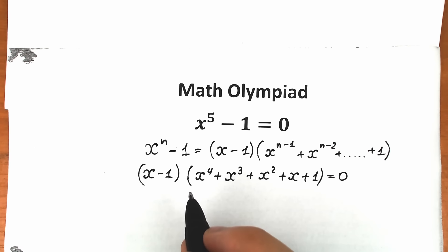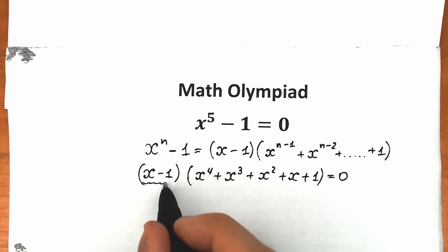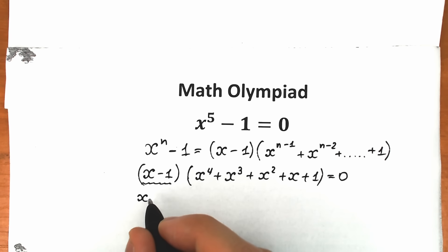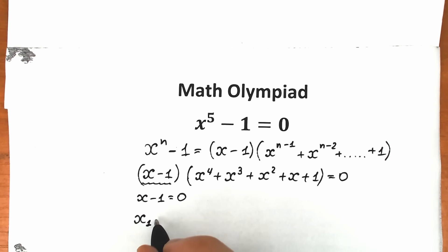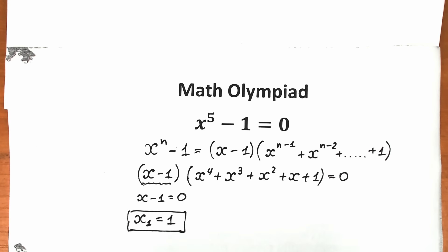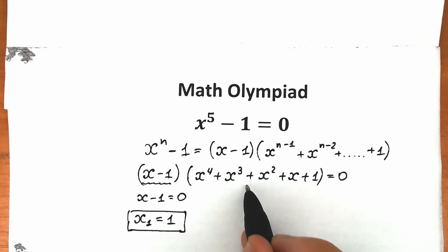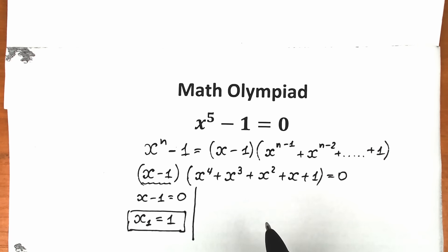A product equals zero when the first parenthesis equals zero. So the first parenthesis gives us x minus one equals zero, and from here we can easily find our first root: x₁ equals one. This is really great — we find this first root very quickly, but we need to find all of the roots. The second parenthesis is a more complicated expression.